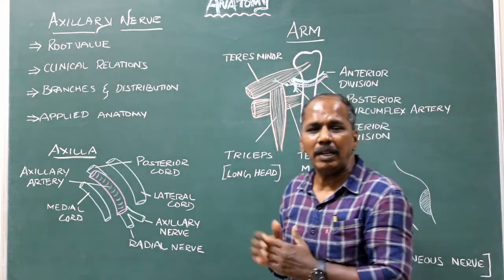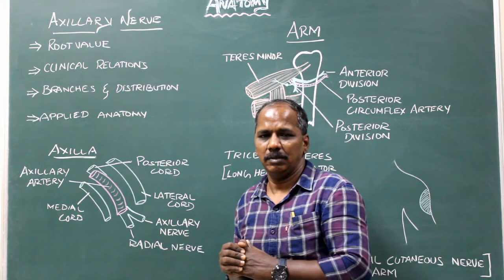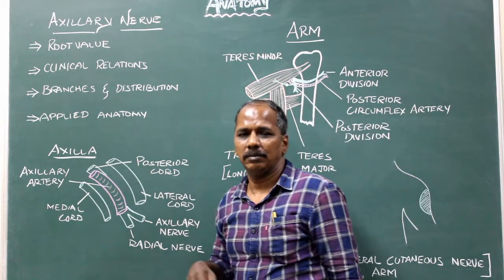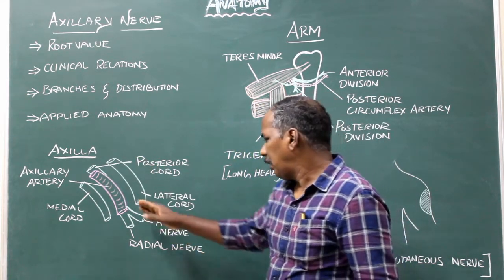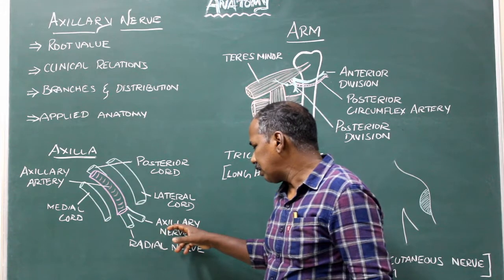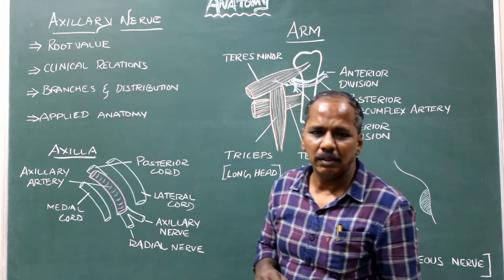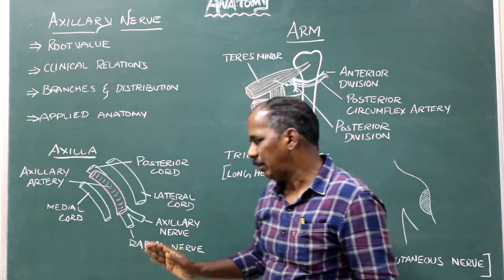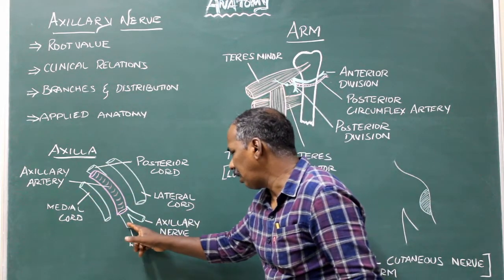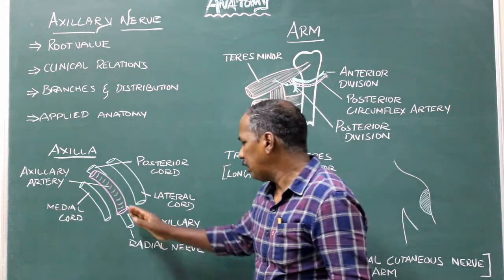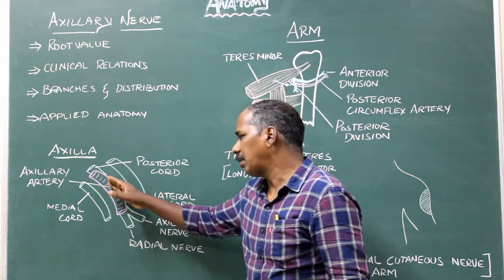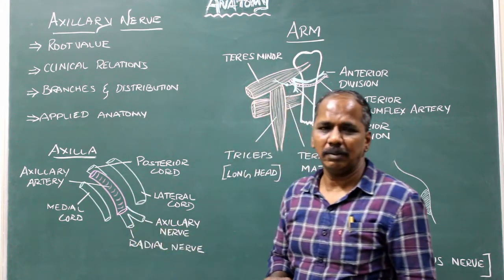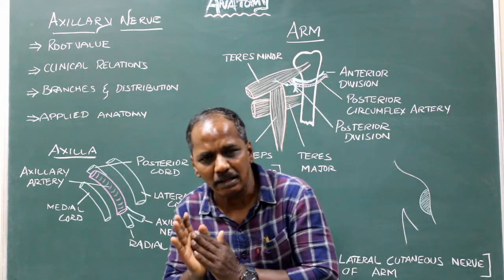Important clinical relations in the axilla. It lies posterior to the third part of the axillary artery, lateral to the radial nerve. It lies on the subscapularis muscle.